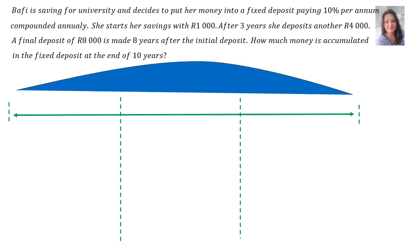Bafi is planning for university and decides to put her money into a fixed deposit, paying 10% per annum, compounded annually. She starts her savings with 1,000 rand. After 3 years, she deposits another 4,000 rand. A final deposit of 8,000 rand is made 8 years after the initial deposit. How much money is accumulated in the fixed deposit at the end of 10 years?